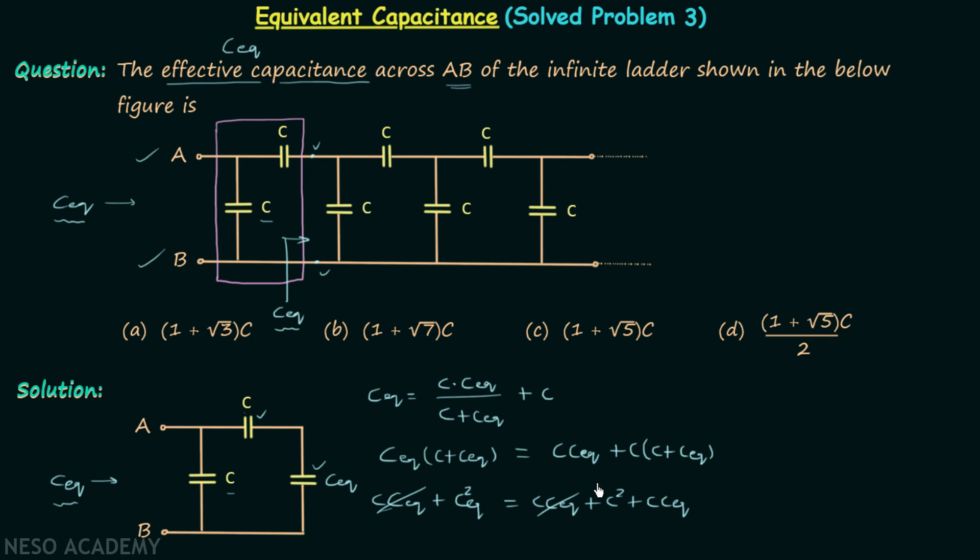This and this will cancel out. So we have C_eq squared, then we will subtract C multiplied to C_eq and C squared on both sides.